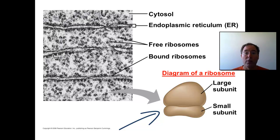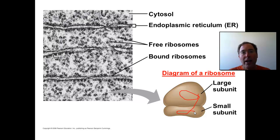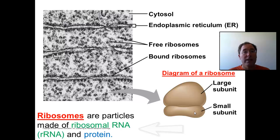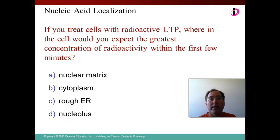Here is a picture of a ribosome. You can see the large subunit and the small subunit. They come together, sometimes on the surface of the endoplasmic reticulum, to do this translation. Just know that there are two different subunits, and they are made of rRNA from the nucleus and also some proteins. Press pause and see if you can get the answer to this question.